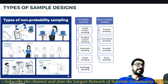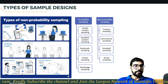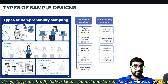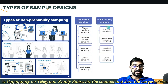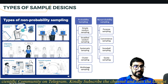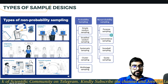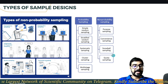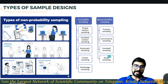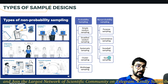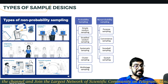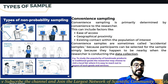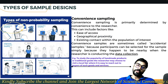Now the types of non-probability sampling: purpose sampling, convenience sampling, snowball sampling, and quota sampling. We will go through each quickly because these terms are very important — these are the things that are asked in exams.